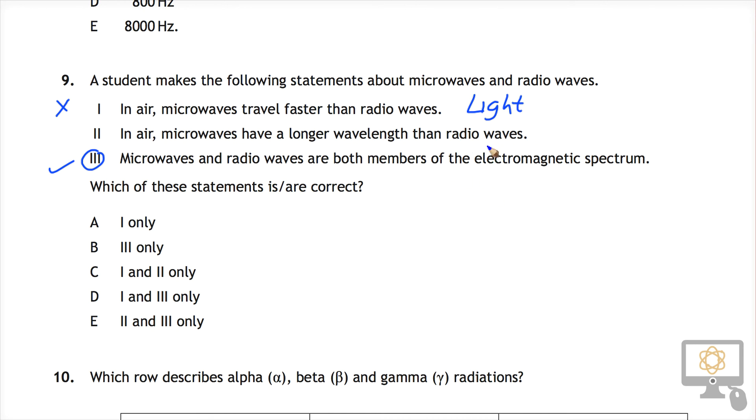So radio waves have got the longest wavelength. Microwaves have got a shorter wavelength and they're closer together. So they've got higher energy. So microwaves have a longer wavelength than radio waves. That is also incorrect.